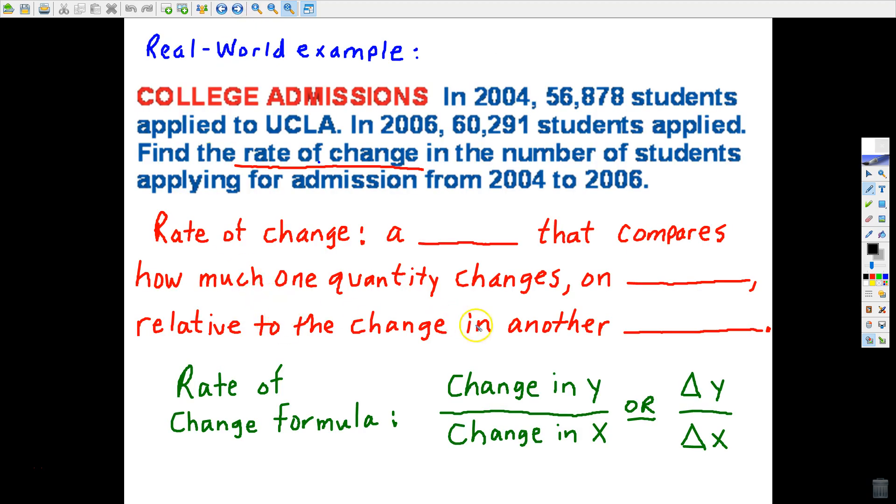We looked at this real-world example today, and we also defined what rate of change is in definition language. Rate of change is basically a ratio, and when you see the word ratio, you can think fraction. Comparing, if it's a fraction, then there's two components, how much one quantity changes on average relative to the change in another quantity.